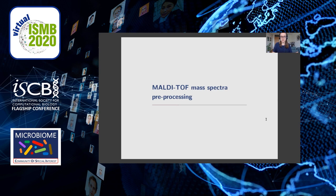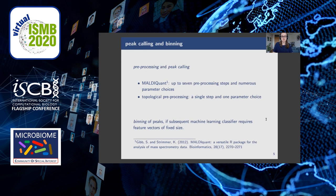Before any machine learning can be applied, the spectra need to be pre-processed: technical artifacts need to be removed and the spectra need to be put into a format usable by a machine learning algorithm. The spectra are pre-processed and then peaks are identified. There are quite extensive and commonly used pre-processing procedures in the literature, which include about seven steps and numerous method and parameter choices. This is often done using commercial software or the open source R package MaldiQuant. These steps and parameter choices are never really justified in the literature, and no information is given on how these parameter choices influence predictive performance.